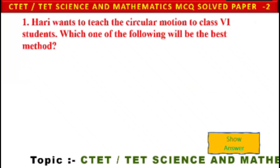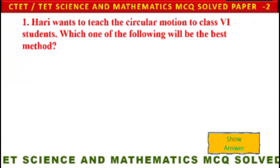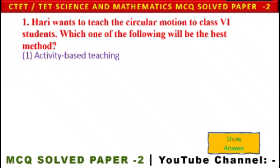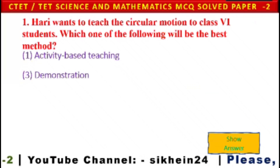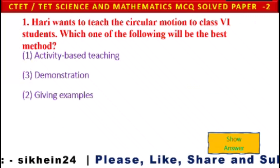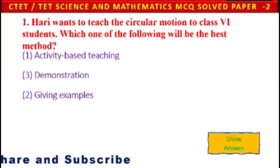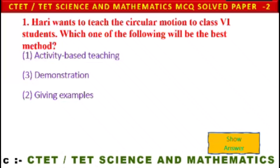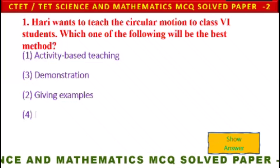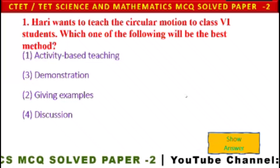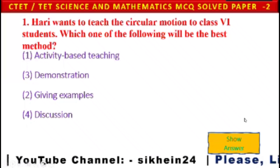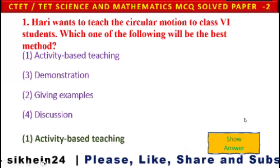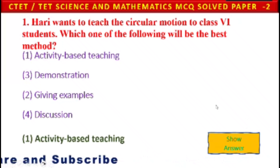Next question: A teacher wants to teach circular motion to Class 6 students. Which one of the following will be the best method? Options: 1) Activity-based teaching, 2) demonstration, 3) giving examples, 4) discussion. Activity-based teaching will be the best method to teach circular motion to Class 6 students.